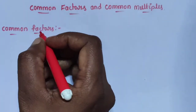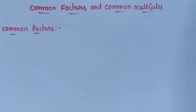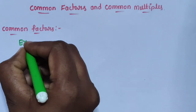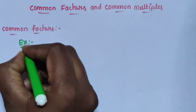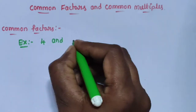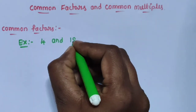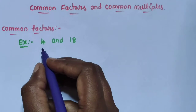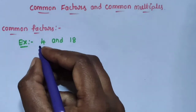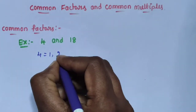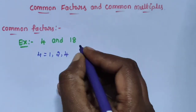How to find out common factors? We use two numbers. For example, 4 and 18. Write the factors of 4. Factors of 4 are 1, 2, 4.